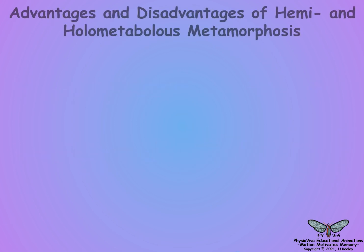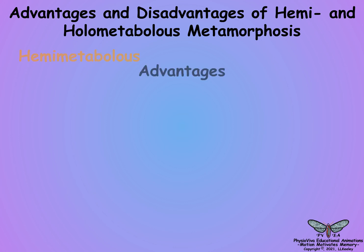What are the advantages and disadvantages of metamorphosis? The advantages of hemimetabolous metamorphosis are that both nymphs and adults are highly mobile, there is no vulnerable pupal stage, and available adults may care for developing offspring. The disadvantages are that nymphs and adults compete for common resources and share common predators.